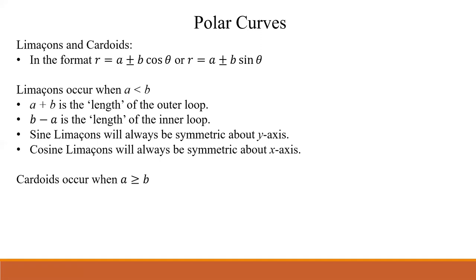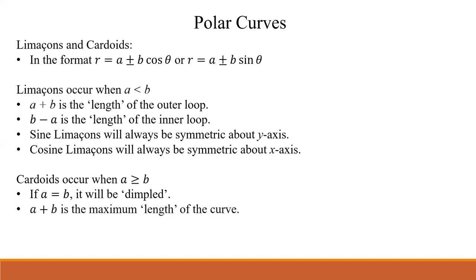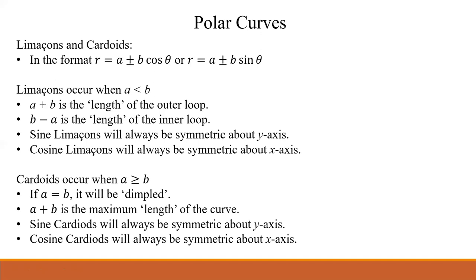Cardioids occur when a is greater than or equal to b. When a equals b, it's called a dimpled cardioid. When a is greater than b, it's a regular cardioid. The a plus b still gives the maximum length of the curve in both cases.